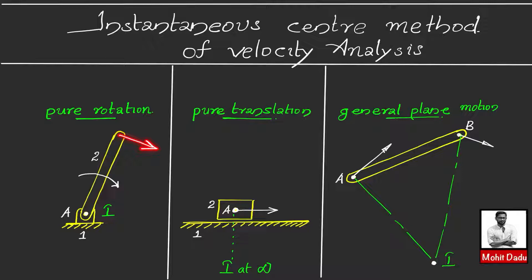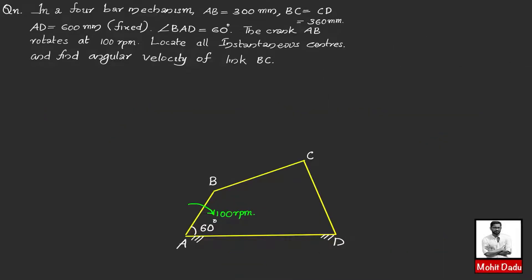In all cases, the velocity vector at any point is perpendicular to the line joining that point to the instantaneous center. For pure rotation, the perpendicular to the velocity passes through the instantaneous center. For pure translation, the perpendicular to the velocity passes through the instantaneous center which is at infinity. You will use this instantaneous center concept for conducting velocity analysis, as understood through the following problem.